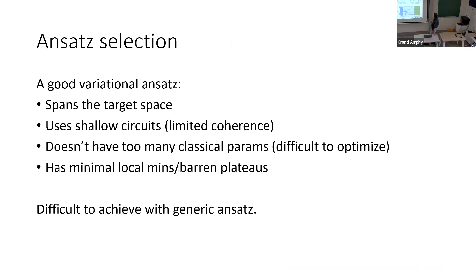The real problem is that neither hardware-efficient nor UCC ansatze are problem-tailored — neither to the chemistry nature of the problem nor to the constraints of real quantum computers, especially regarding noise. So what makes a good ansatz? A good variational ansatz should span the actual target space, use only shallow circuits to maximize use of limited coherence time, use not too many classical parameters to make optimization tractable, and avoid too many local minima or barren plateaus.